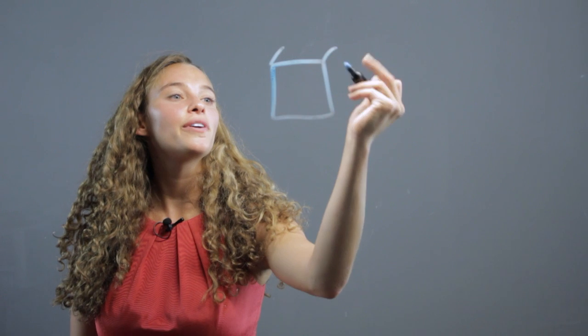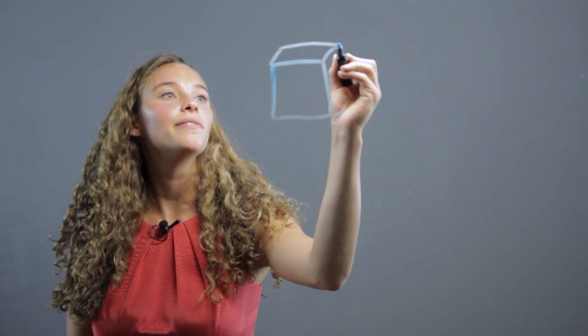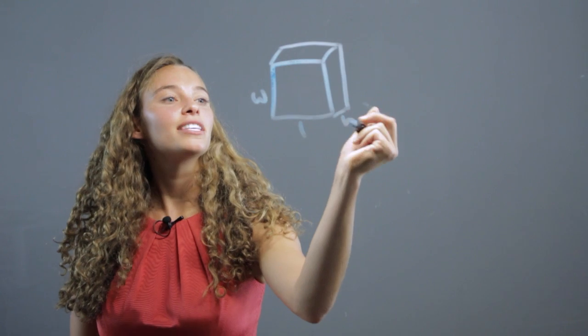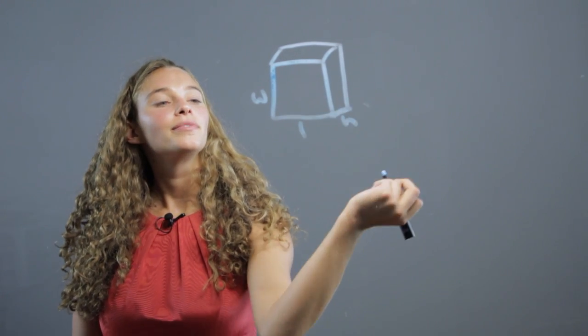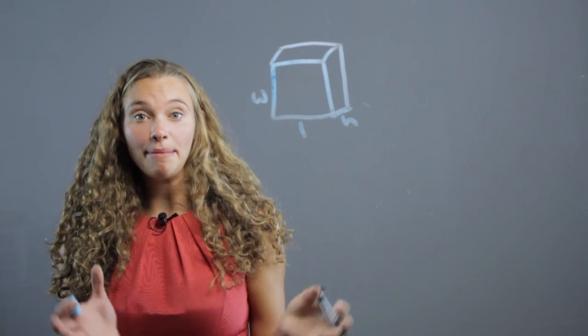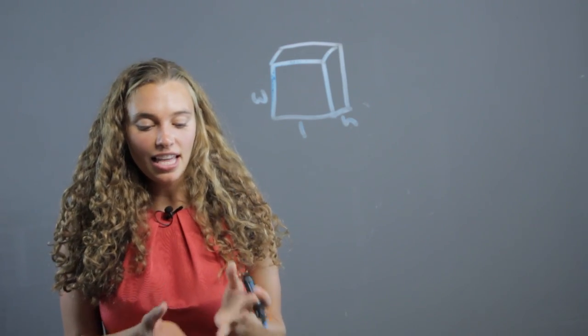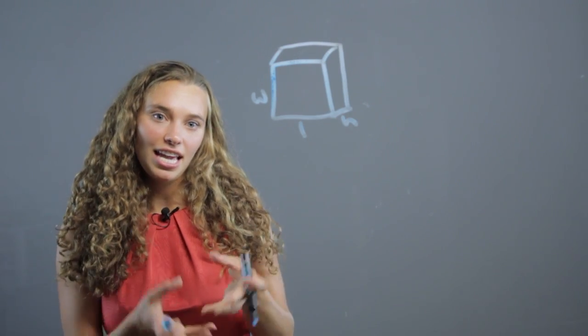So, the formula for a rectangle we know is the length times the width times the height of the rectangle. We can give them like a box and have them fill it up so that they understand that it's everything in the box.